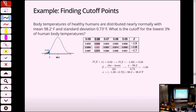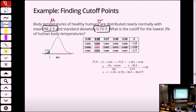Here's another example: body temperature. We know some people run cold and some run hot. From physiological studies looking at tens of thousands of people, body temperatures of healthy humans are centered on 98.2 Fahrenheit with standard deviation 0.73. This gives us our mean and standard deviation. What would be the cutoff for the lowest 3% of people? We want the cutoff so that this area is 0.03 — the third percentile.